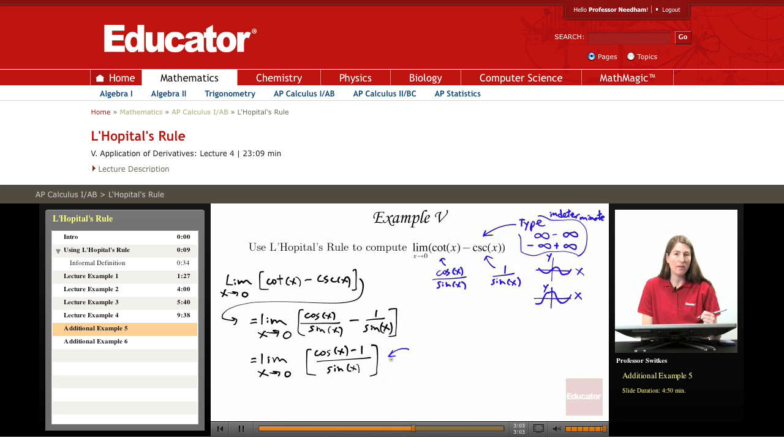As x approaches 0, cosine of x approaches 1. So cosine of x minus 1 approaches 0. And then sine of x is approaching 0 as x approaches 0. So we have type 0 over 0 form here. And so this is all set for L'Hôpital's rule.